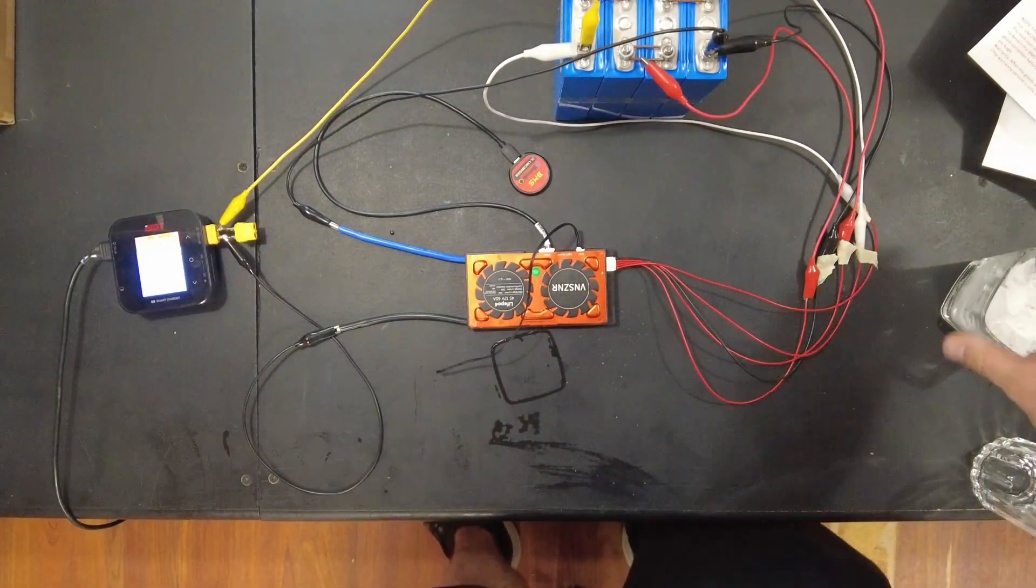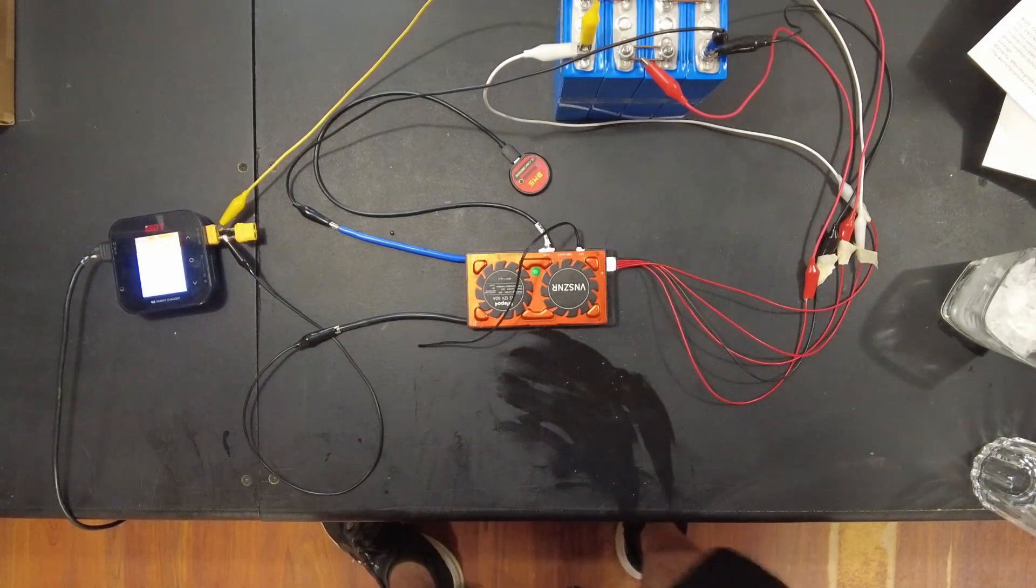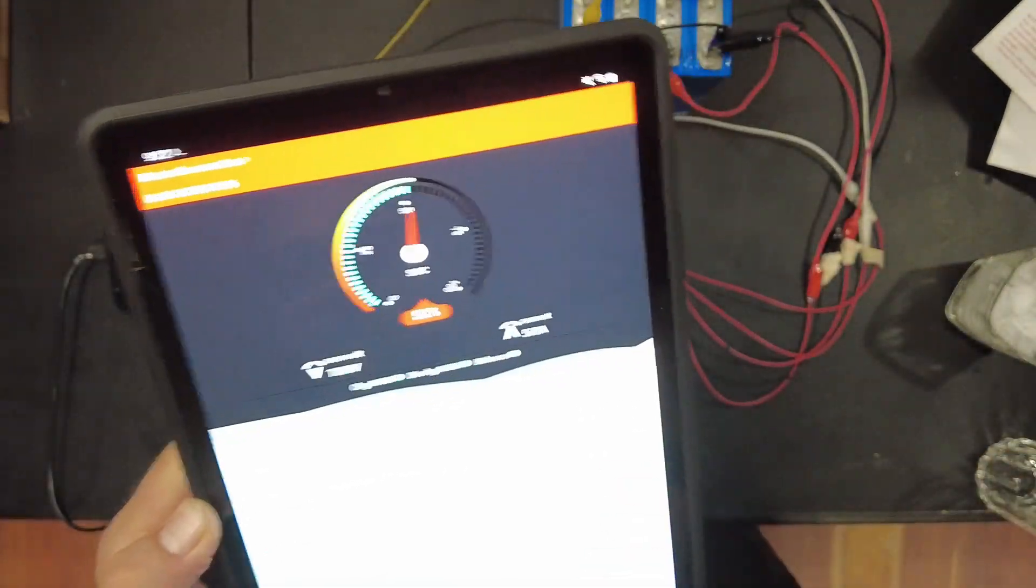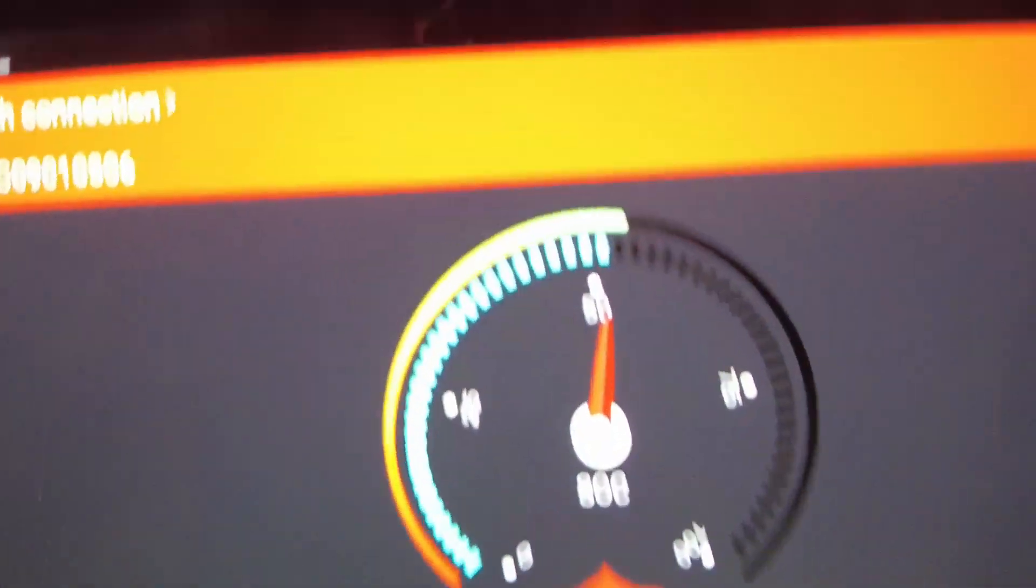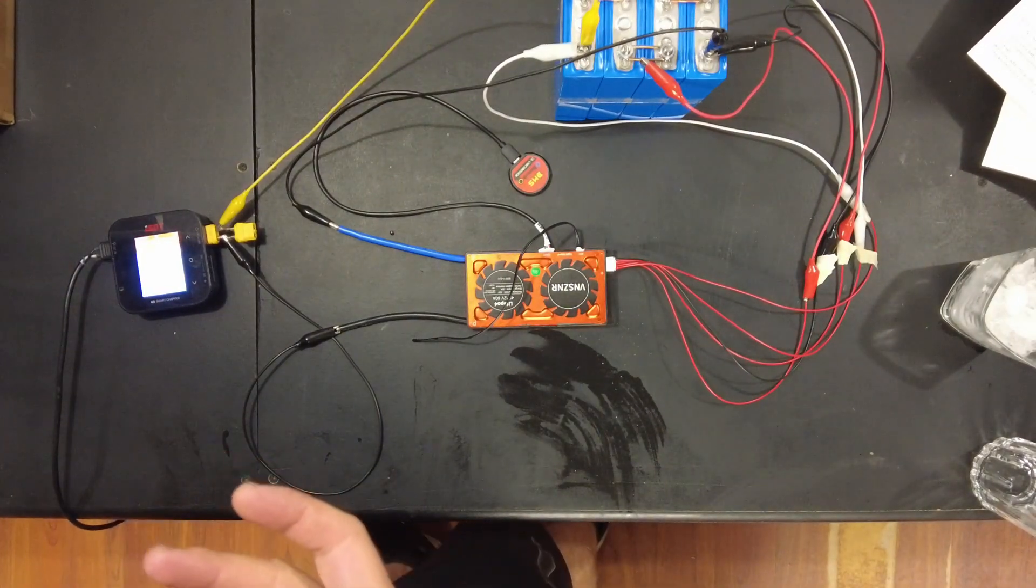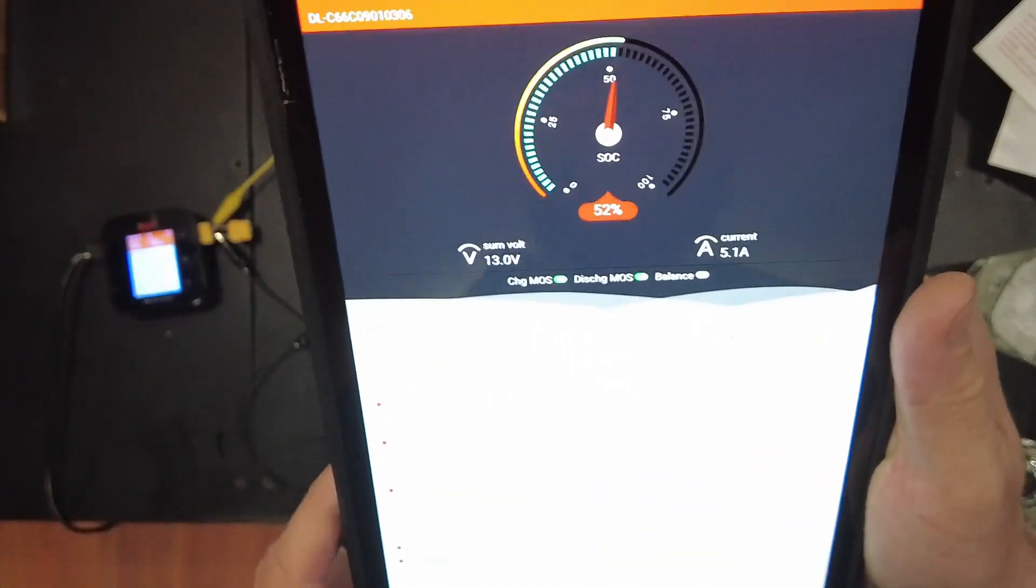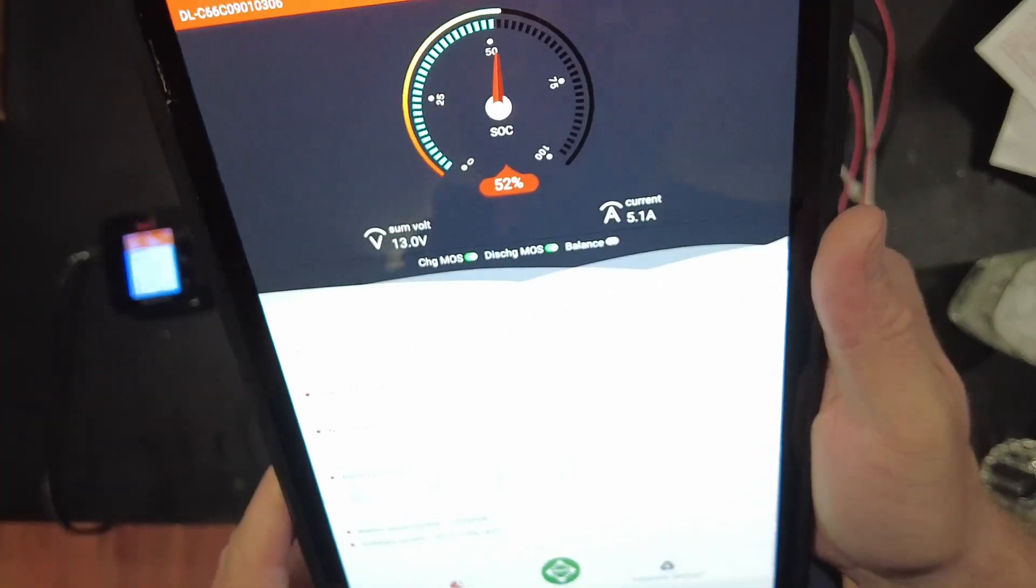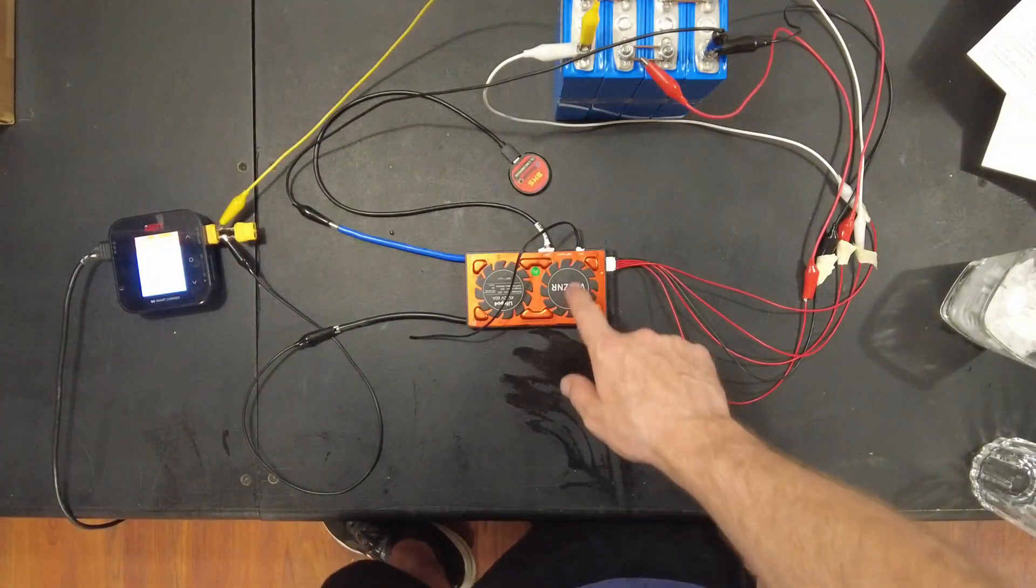Okay so that works. All right guys, so the clone Daly BMS works with the Daly BMS smart app. You can set all the settings, you can see all the parameters. This is really cool. I really like this app. Sorry you can't really see everything, I need some filters for this camera. But you can set all the parameters, it seems to work really good. I really like JBD BMSs, but I don't know, I might end up liking these better.